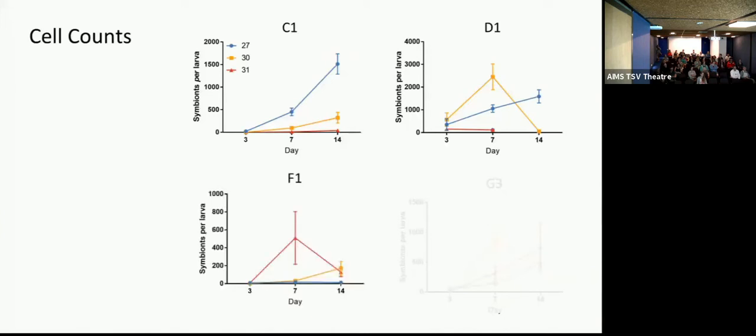For F1, which is our most thermally tolerant symbiont that can handle up to 34 degrees, we were really curious about what this one would do. And it's interesting because you can see right off the bat, at day 7 at 31 degrees, the infection rate was actually much higher than at the lower temperatures. And then at G3, similarly, we had relative to C and D at ambient, slow infection, but also performed a lot better than some of the other ones at the 31 degree temperatures.